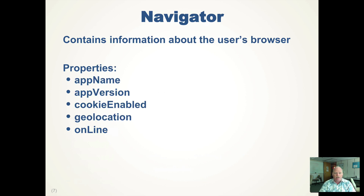The next thing is the navigator, which provides information about the user's browser. You can find out the app name — what browser you're running — what version it's running, whether cookies are enabled, and the geolocation feature, if enabled, can give you the latitude and longitude of where the browser thinks it is. The online property will tell you if the browser is connected to the internet. For geolocation, the user has to give permission — they can say no, and then navigator.geolocation is just going to be undefined or null. So not all these features will necessarily work every time.